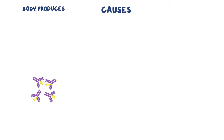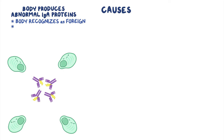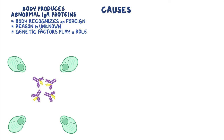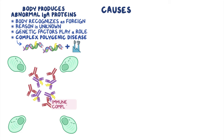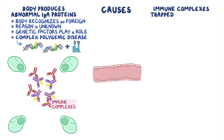In IgA nephropathy, for some unknown reason, our body starts producing abnormal IgA proteins that the body recognizes as foreign. The exact reason behind production of the abnormal IgA molecules is yet to be known, but there is some evidence to suggest that genetic factors play a role. It has been suggested that IgA nephropathy is a complex polygenic disease, meaning that many genes along with triggering environmental factors contribute to an individual developing the condition. Whatever the cause, the result is that our immune system attacks these antibodies, which leads to the formation of clusters of proteins called immune complexes, which then travel through the bloodstream and get trapped at sites of filtration, like the glomeruli in the kidney.